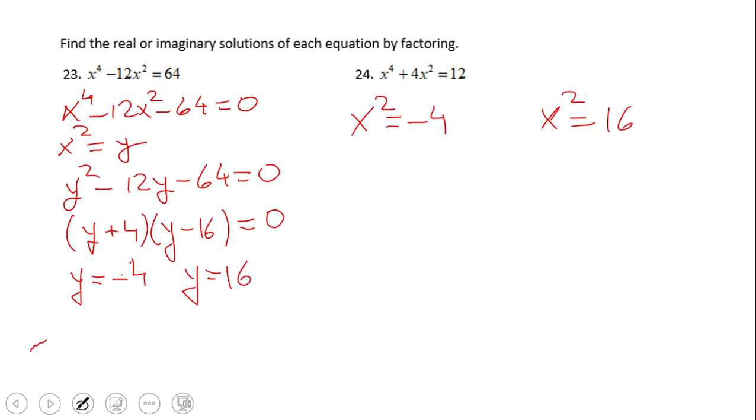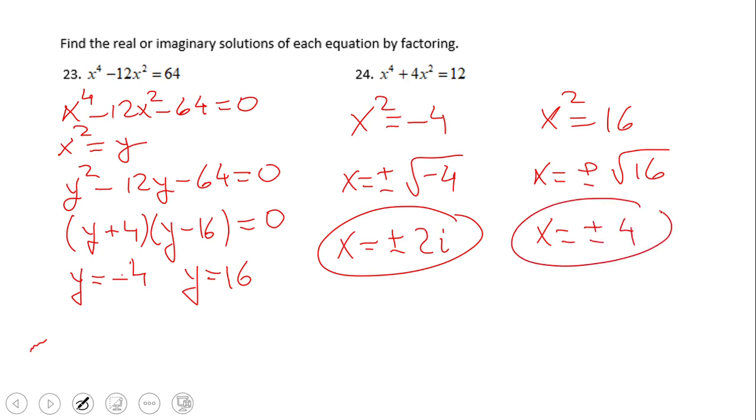So how do we solve? We're going to take square root here, and that will give us the imaginary solution, right? Square root of negative 4 is 2i, so we have x equals plus or minus 2i. And here again, we're going to take square root, and this one is going to give us two real solutions: positive 4 and negative 4. Pause this video clip and try the last one, number 24.